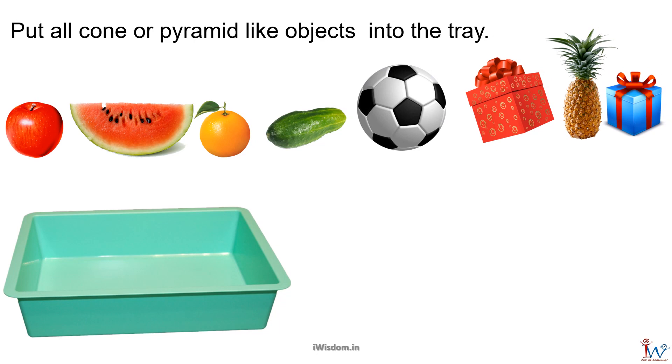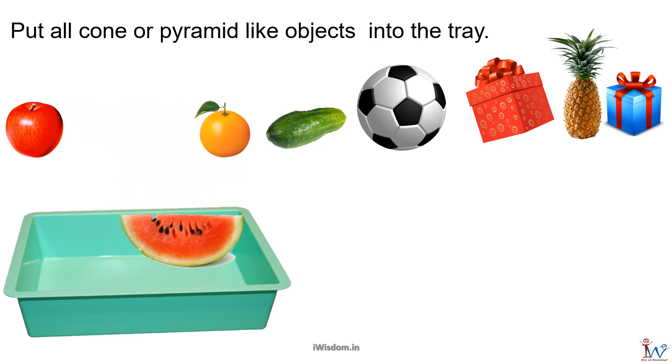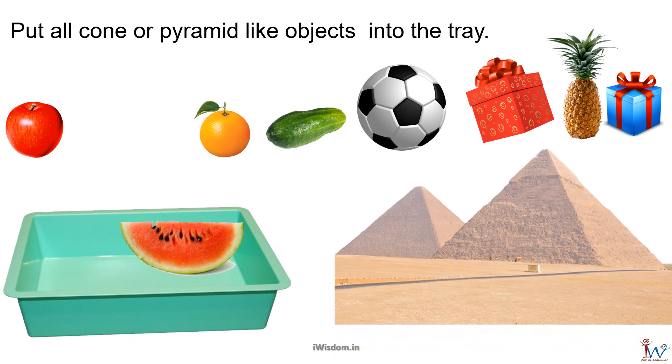Now put all cone or pyramid-like objects into the tray. Mr. Viz, only watermelon is left, we have selected all others already. So it is easy. Well, as you can see watermelon pieces having wide base and sharp angular top like a triangle. Shape of such objects are called pyramids, as they resemble the shape of the giant Egyptian pyramids.